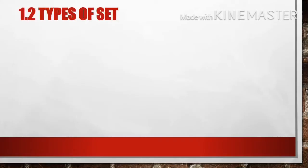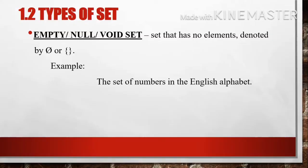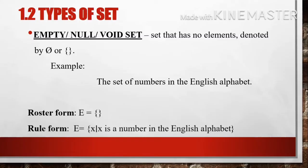Let's now proceed to the types of set. First is the empty, null, or void set. It is a set that has no elements, denoted by the empty set symbol. Example: the set of numbers in the English alphabet. It is an empty set because there is not a single number in the English alphabet.